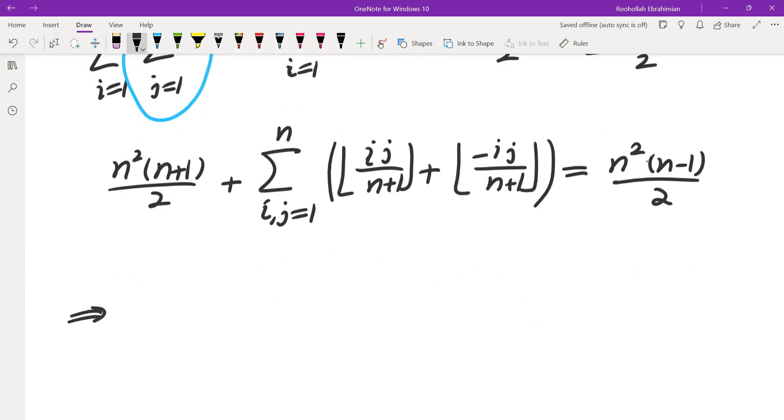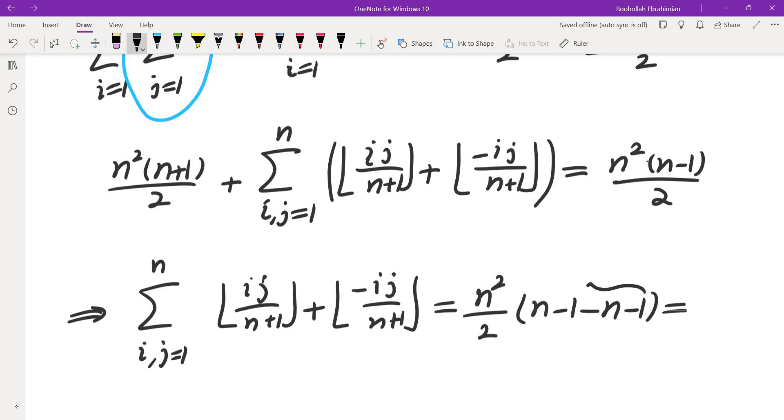These are all equivalent to each other. So this means I can say that the sum of i and j go from 1 to n, floor of ij over n plus 1, plus floor of negative ij over n plus 1, is equal to, take the difference of these two, you get n squared over 2, times n minus 1 minus n minus 1, which is negative 2, so this is negative n squared.